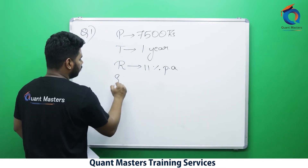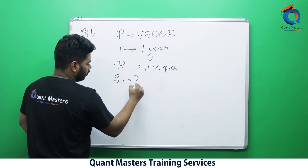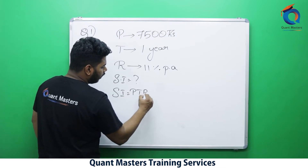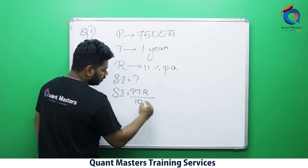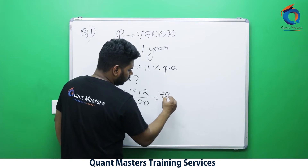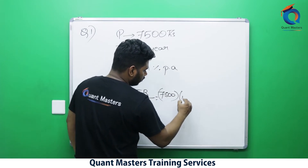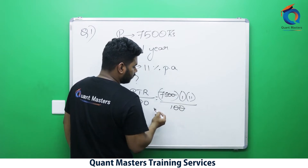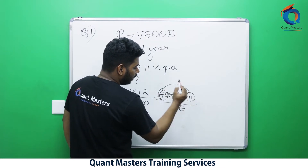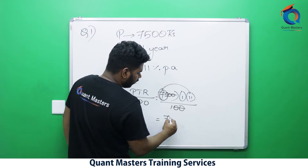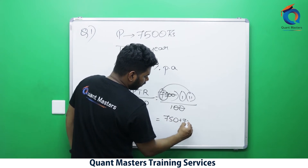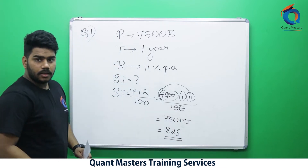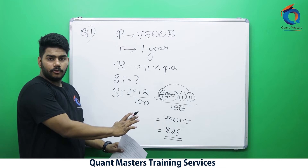They are asking for simple interest. We know simple interest equals PTR divided by 100. Principal is 7500, time is 1 year, rate is 11%. The 100 gets cancelled; 75 into 11 gives 750 plus 75, that is 825. This is our answer. This method is right.